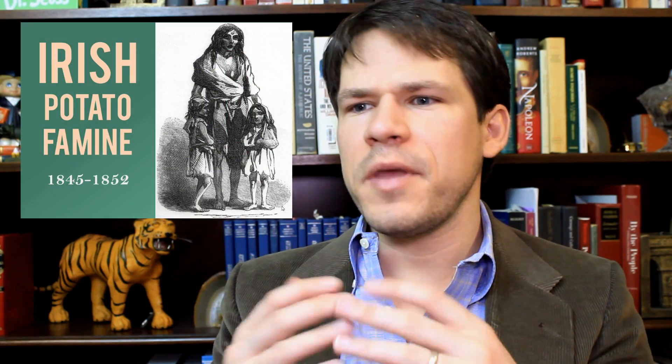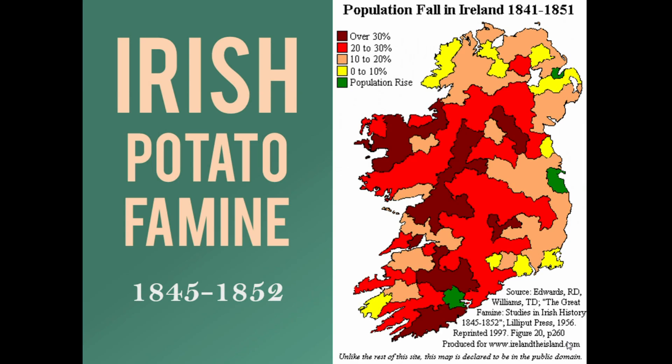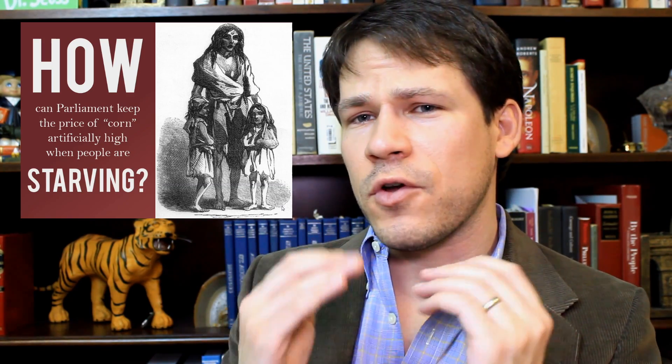The nail in the coffin for the Corn Laws was the Irish Potato Famine, which started in 1845. In some places as many as 30 percent of the population was gone — some to death, some to immigration to Britain and the United States. The question became: how can Parliament keep the price of corn artificially high when people are starving? Sir Robert Peel, ironically the leader of a Tory conservative government, decided he wanted to repeal the Corn Laws, using the famine as a political appeal.